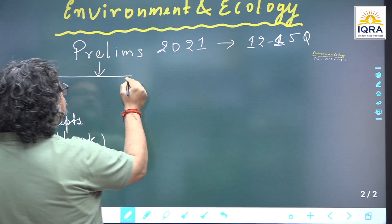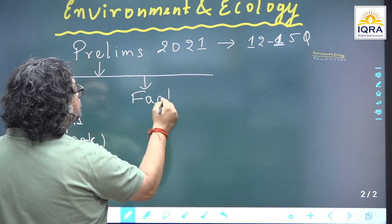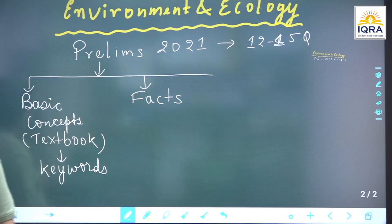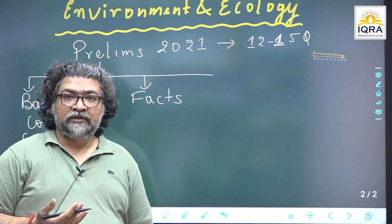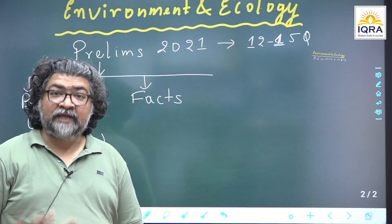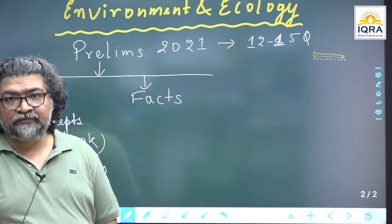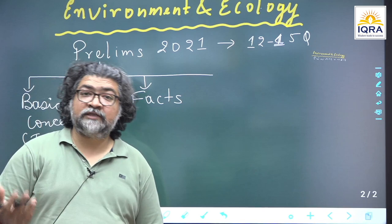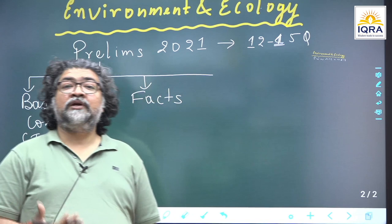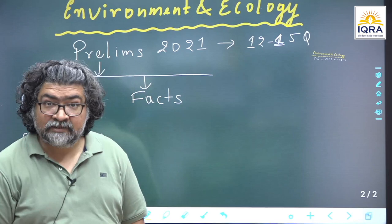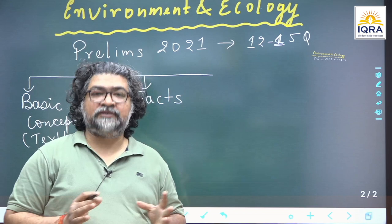Second, there are also a number of important facts — such as the Red Data Book, critically endangered species, endangered species, vulnerable species which make headlines. Even facts about habitats, national parks, sanctuaries, biosphere reserves, tiger reserves, and elephant reserves will be tested. Climate change conferences, Conference of Parties (COP), the Convention on Biodiversity (CBD), the Ramsar Convention on wetlands of international importance — India now has 42 Ramsar sites — these are certain facts you need to be aware of.